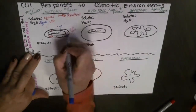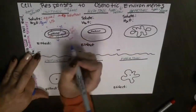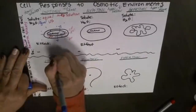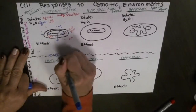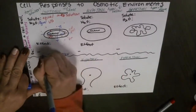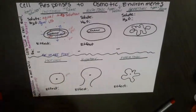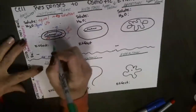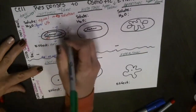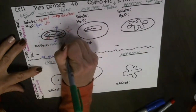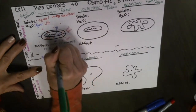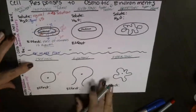Since concentrations are equal — it's isotonic — there is no higher concentration pulling water in one direction. Water goes in and out, but we have no net flow of H₂O. The effect is that the rate of osmosis is equal, which is why we have no net flow.